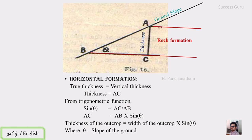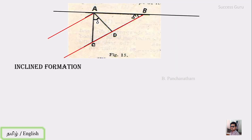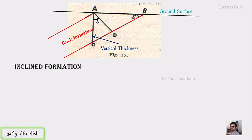This next case is a little more complex — the inclined formation. In the inclined formation, the ground surface is horizontal but the rock formation is inclined. The ground surface is horizontal, so this is the vertical thickness. This is the thickness of the bedding plane, and this is the true thickness. In the inclined formation, the true thickness differs from the vertical thickness. The vertical line is the vertical thickness, and the bedding plane gives the true thickness.